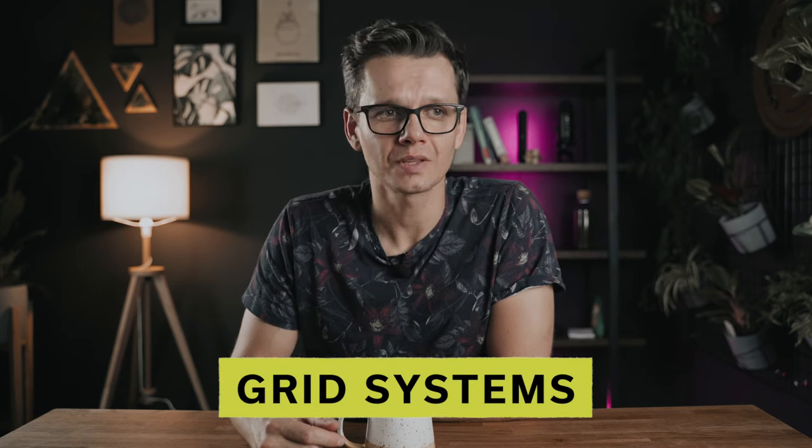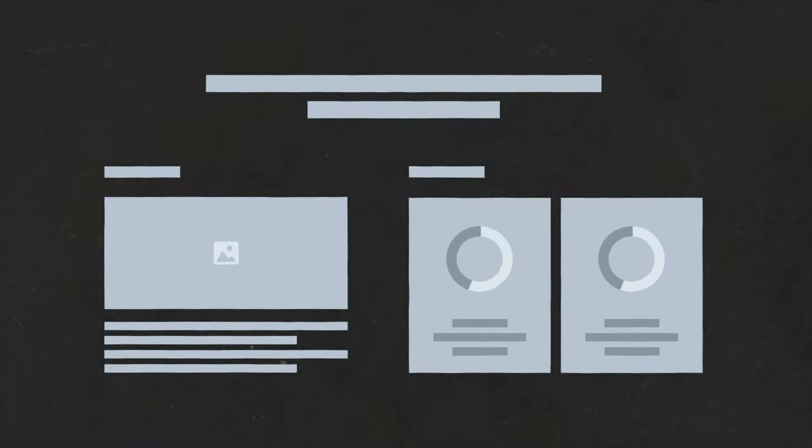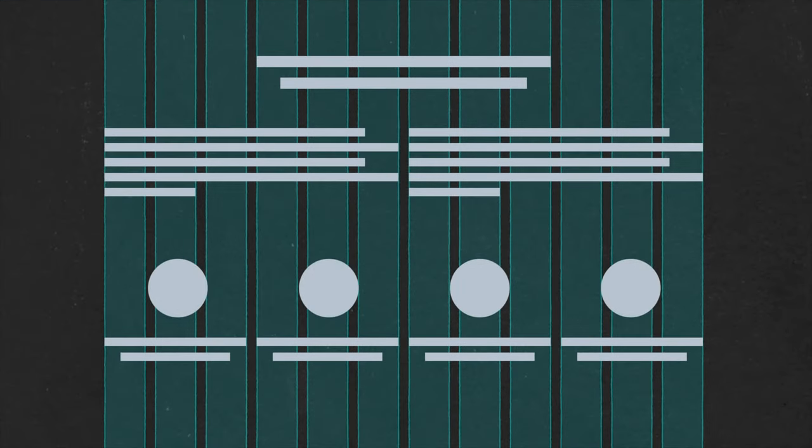Let's get right into it. Let's talk about grid systems. What is a grid system? Basically, it's a structure of columns and lines that allow you to organize your texts, your photography, and your design elements on the canvas. It brings consistency and a feel of rhythm to your visual language. It's like a backbone of every design because it sort of holds everything together.